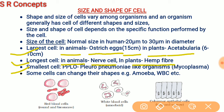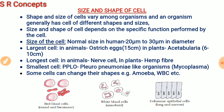The smallest cell is PPLO, also called pleuropneumonia-like organism, and it is also known as mycoplasma — this is the smallest cell on Earth. Some cells can also change their shape, for example, amoeba and white blood cells can change their shape.